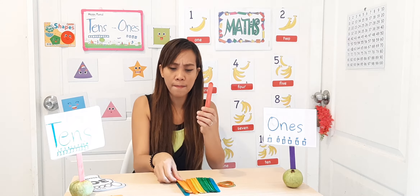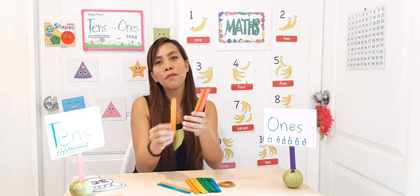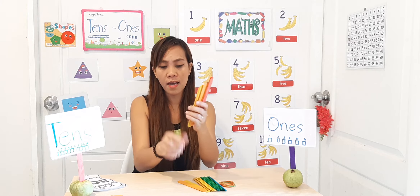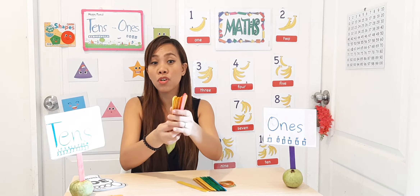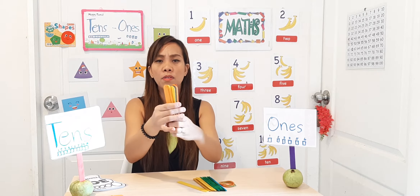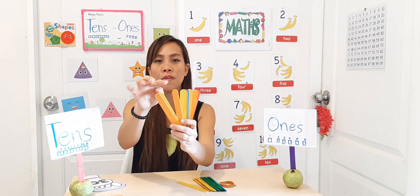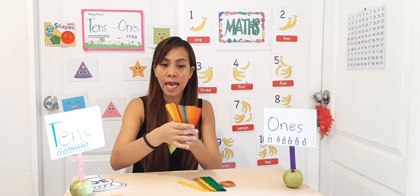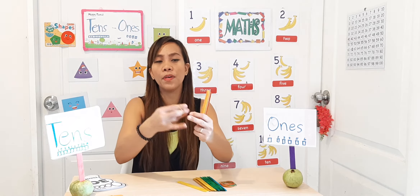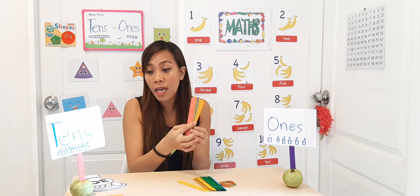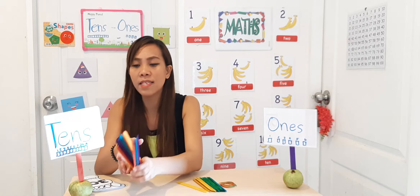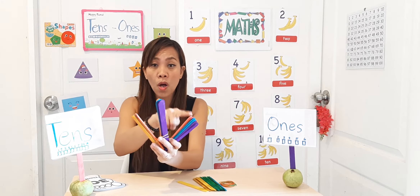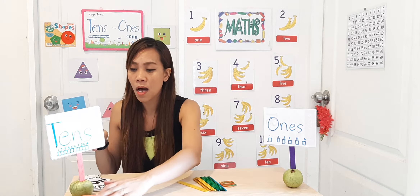Keep counting: 1, 2, 3, 4, 5, 6, 7, 8, 9, 10. Make sure you have a set of ten. Let's count it again: 1, 2, 3, 4, 5, 6, 7, 8, 9, 10 — exactly ten. Let's tie it again and put it in our tens. So how many tens do we have now? One, two, three — three sets of tens.